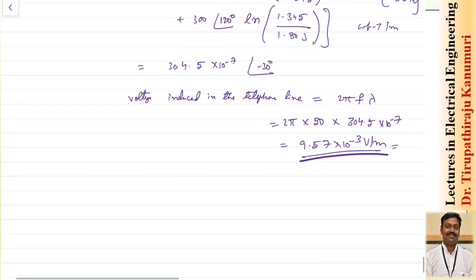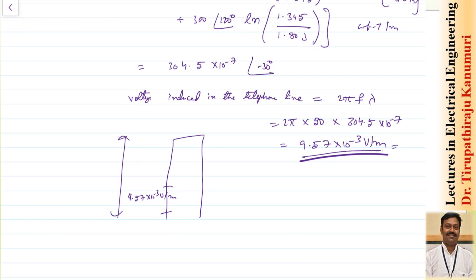This voltage multiplied by the length of your line gives the total voltage induced due to electromagnetic or magnetic effect. This voltage divided by the impedance of the communication line loop gives a current — this interference current adds to the signal current passing in the communication channel, so your signal gets distorted due to the electromagnetic effect.